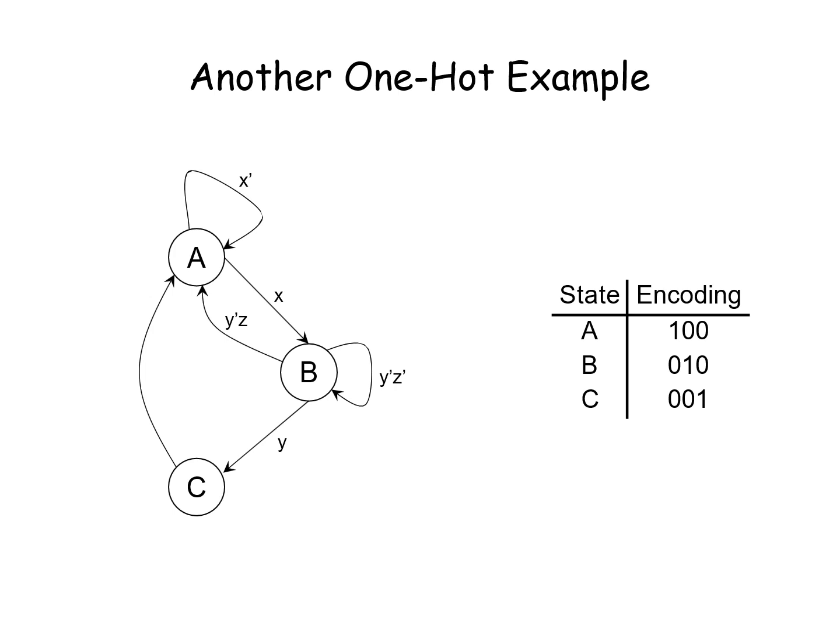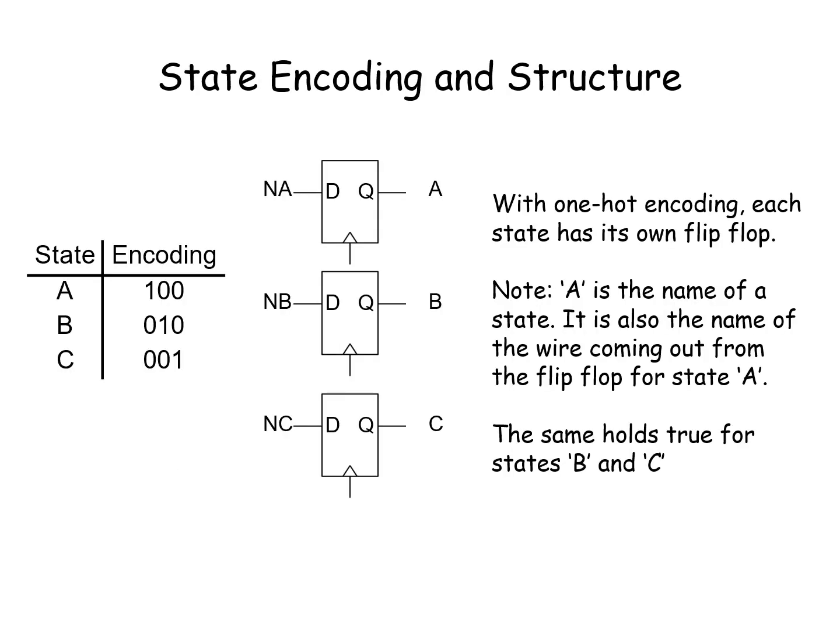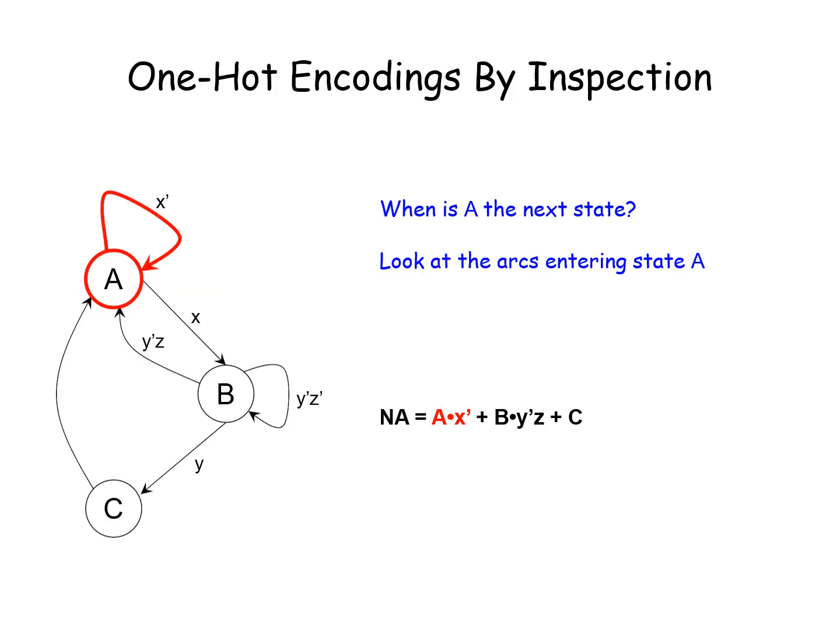Now, as per the state diagram, we have to write down the equations. So, here, you look at the equation. Each one, one flip-flop. Present state, next state. You take the state next to state NA is equal to, what are all the arcs entering to A? So, A into x' plus B into yz' plus C. So, these are all the arcs: 1, 2, and 3. So, three arcs are entering into A based on this, you write down the equation.